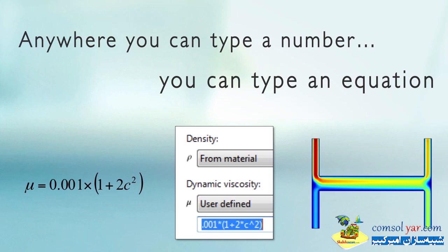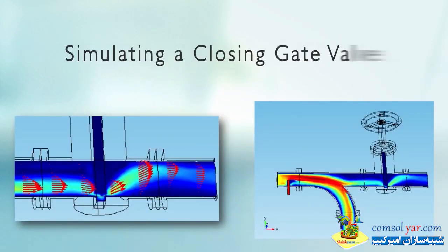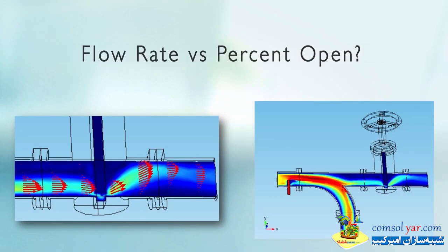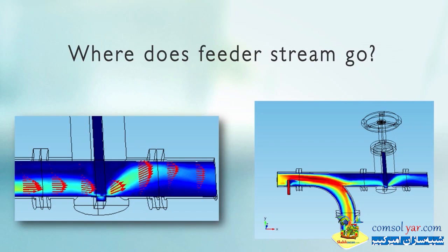This tutorial is looking at a gate valve downstream of a wye joint in a typical pipe. The question is: what's the flow rate as the gate closes? We also have a small feeder stream feeding in about midstream, upstream of the wye, and as the gate closes, where does that stream go?